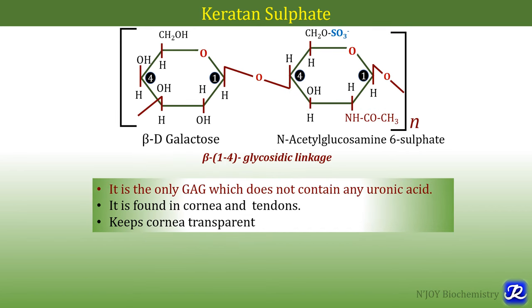Keratan sulfate consists of beta-D-galactose and N-acetylglucosamine-6-sulfate, both linked together by a beta-1,4 glycosidic linkage. This is the only GAG which does not have uronic acid — it has galactose instead. It is found in cornea and tendons, and keratan sulfate is responsible for keeping the cornea transparent.